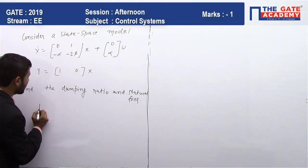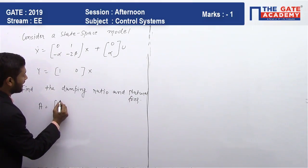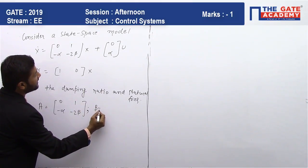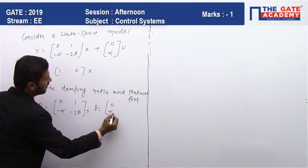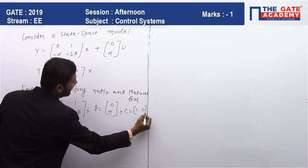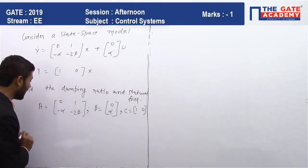The A matrix is given as [0, 1; -alpha, -2*beta]. B matrix is given as [0; alpha] and the C matrix is given as [1, 0]. So what we will have to do? We will have to find SI minus A.